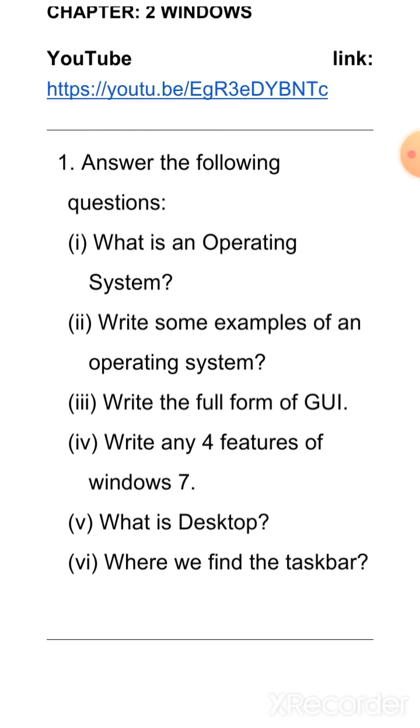The fourth question is, write any four features of Windows 7. Students, there are many features of Windows 7. But the four features are, fast, smart and safe. The second one is, easy to use and learn. The third one is, plays music and video. The fourth is, receive and send email, views files etc.